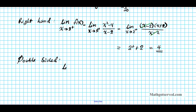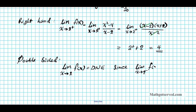The double-sided limit — the limit as x approaches two of the function — does not exist, because the left-hand and the right-hand limits are not equal. Since they are different, the double-sided limit does not exist.